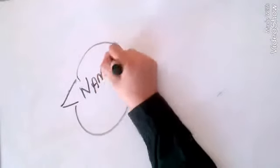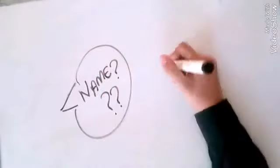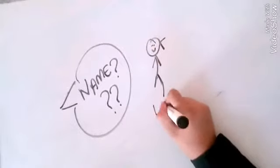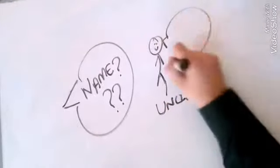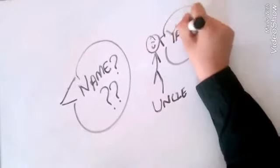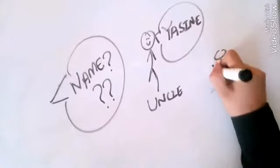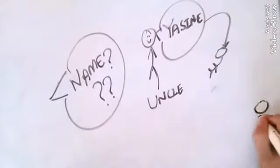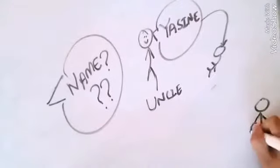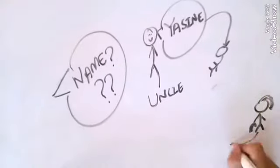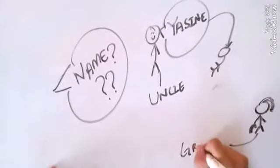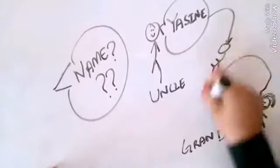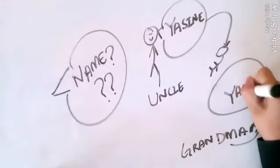Then the baby had to be named. So everyone was wondering what the name could be. So my uncle participated. He suggested that the name should be Yassin with an N. But then my grandma said that the name should not be Yassin with an N but Yasser with an R.